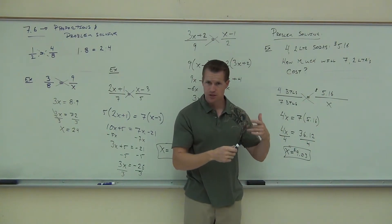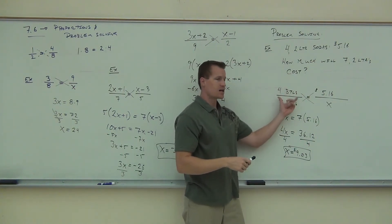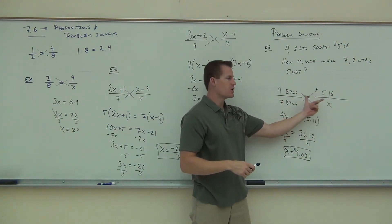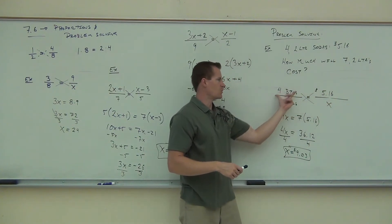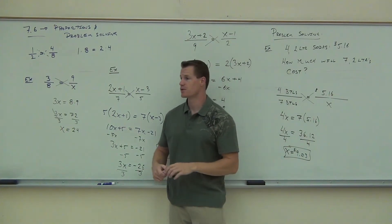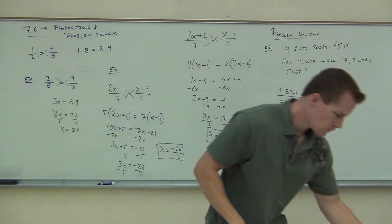Does it make sense to you? Now, I want to give you another suggestion here. If you don't like the way this is set up, you could do 4 bottles and 7 bottles. You could do bottles on the numerators and costs on the denominators. You just have to know that $5.16 would go with 4 bottles. So it would be 4 over 516, 7 over X. Notice how when you cross-multiply, that makes no difference.